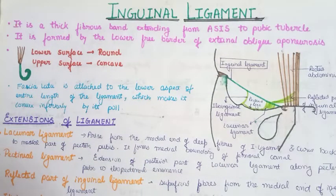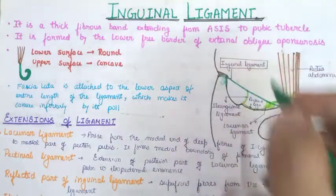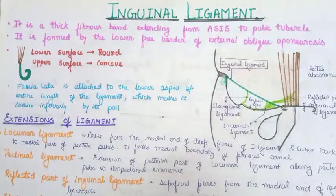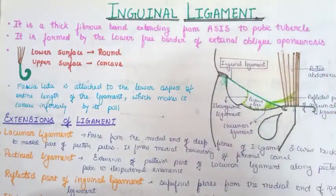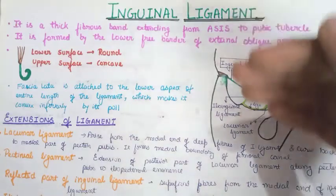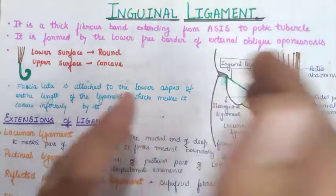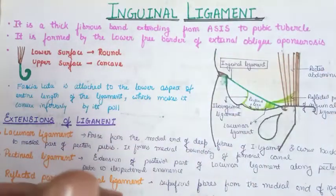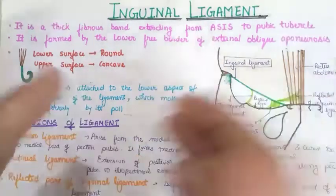The inguinal ligament is formed by the lower free border of the external oblique aponeurosis. The external oblique aponeurosis is nothing but the ending portion, or modified tendon, of the external oblique muscle, which is one of the muscles of the anterior abdominal wall.